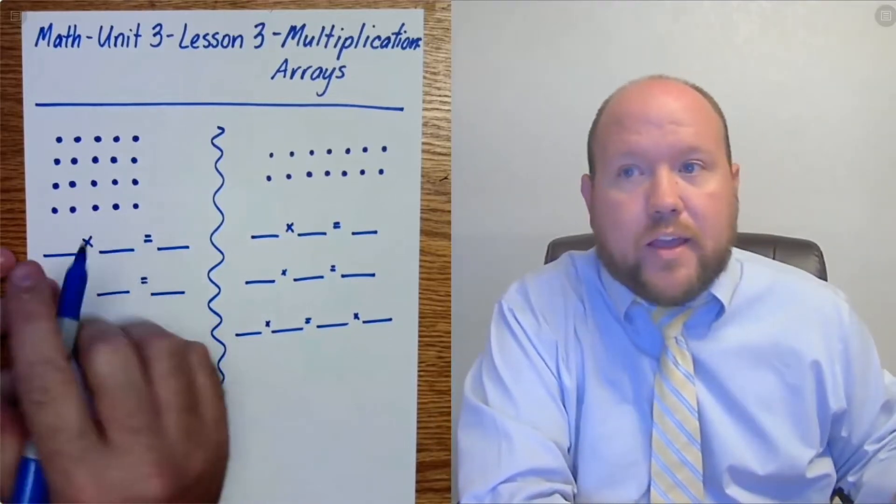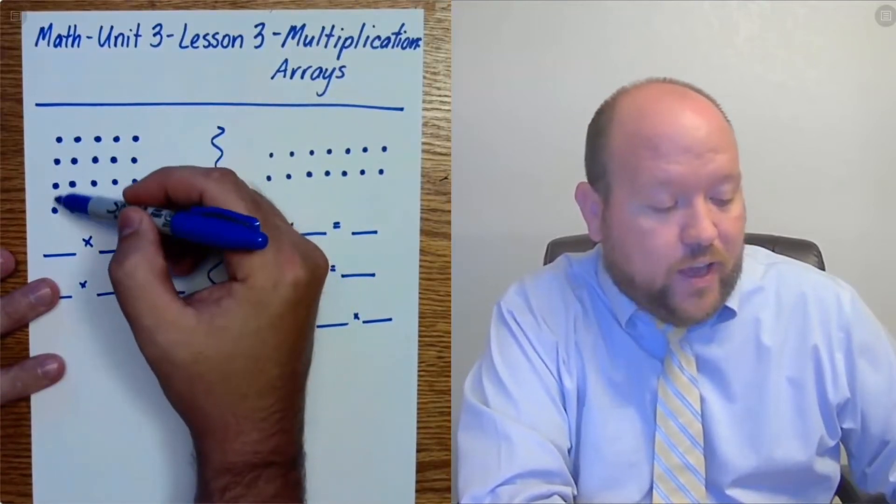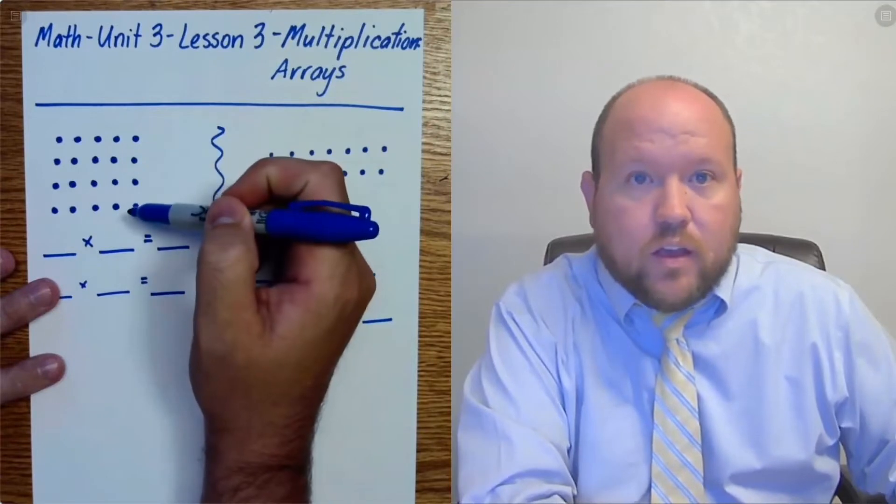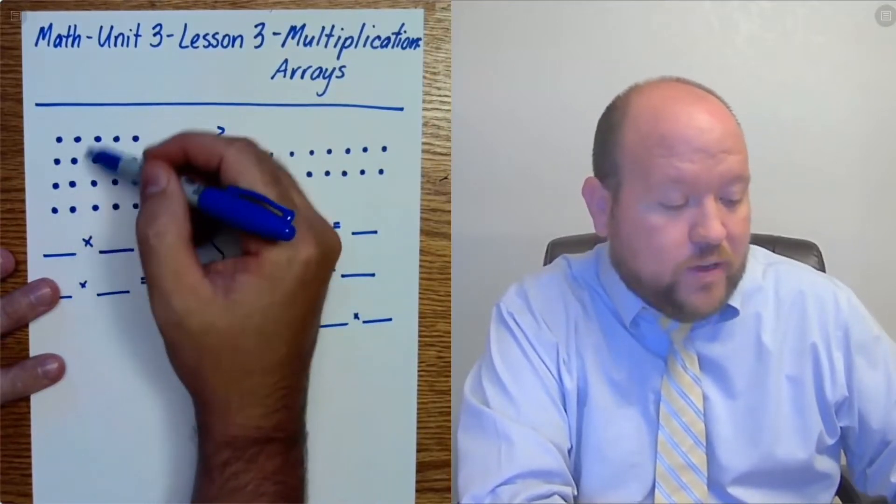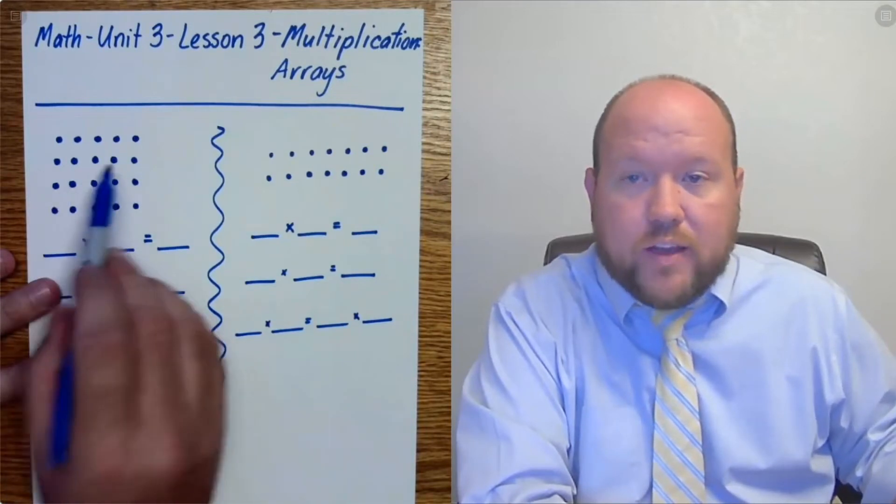Here I have an array. Now what you'll notice with an array is the rows are all of the same length and the columns - columns are up and down - they're all the same height. The rows are all the same left to right.